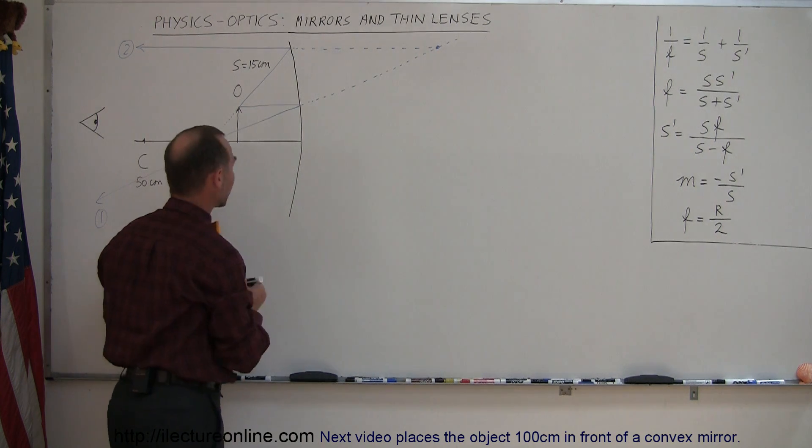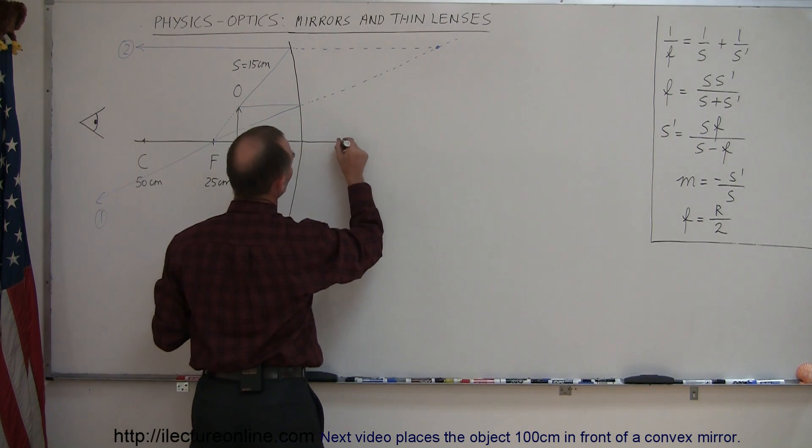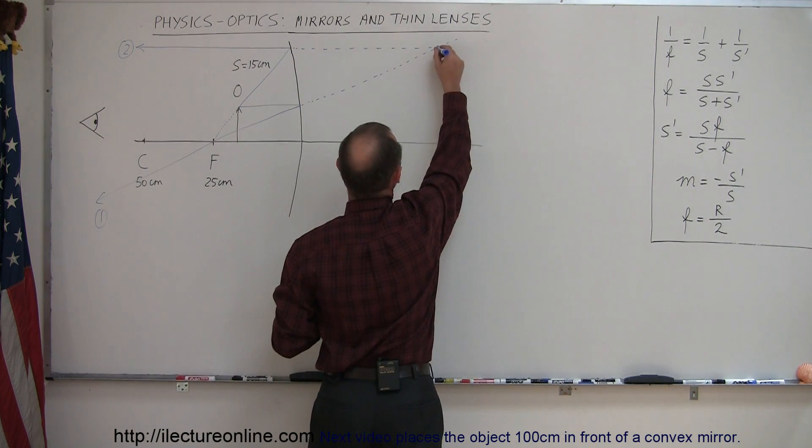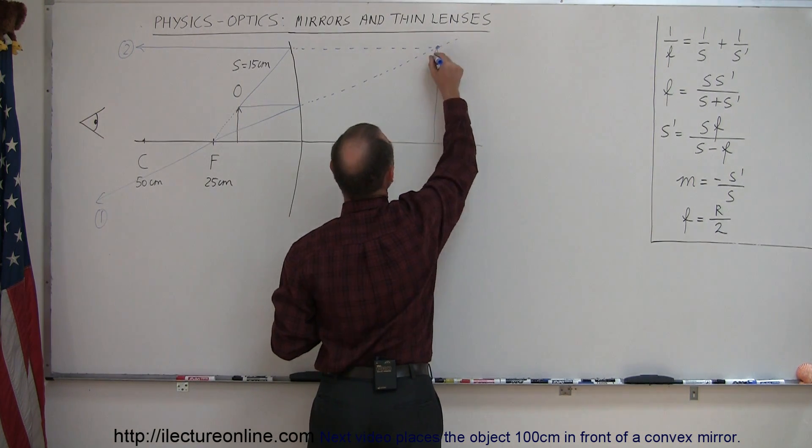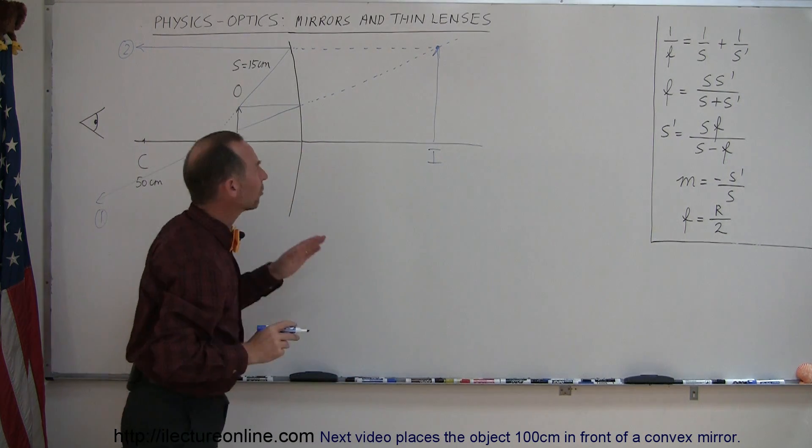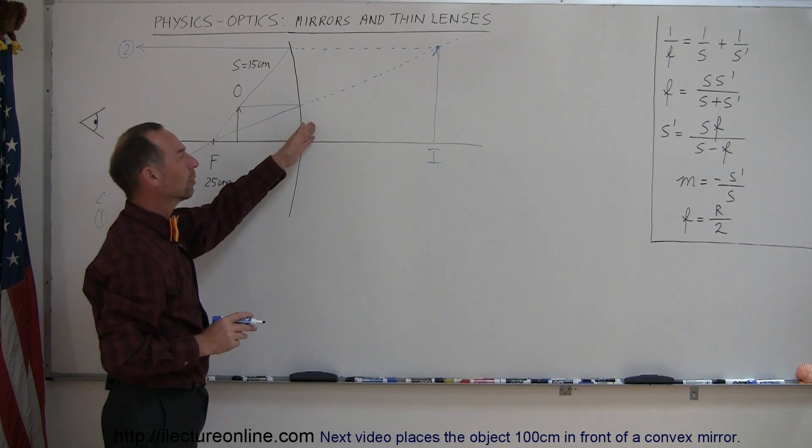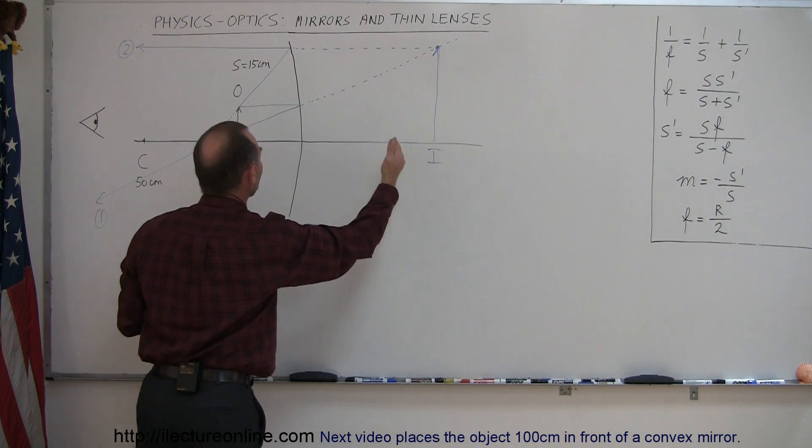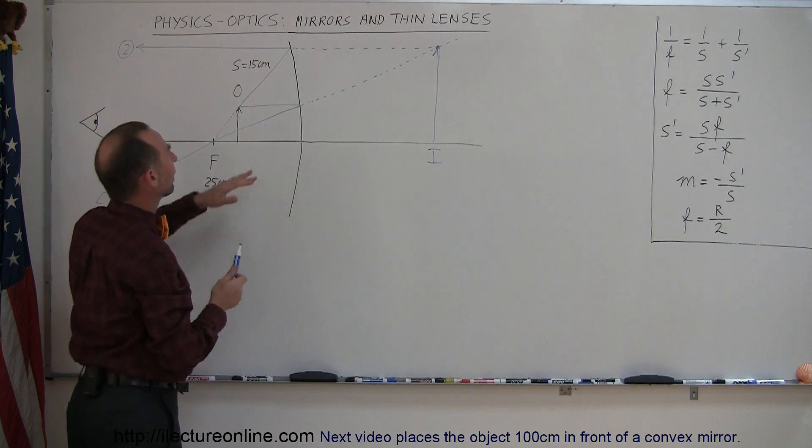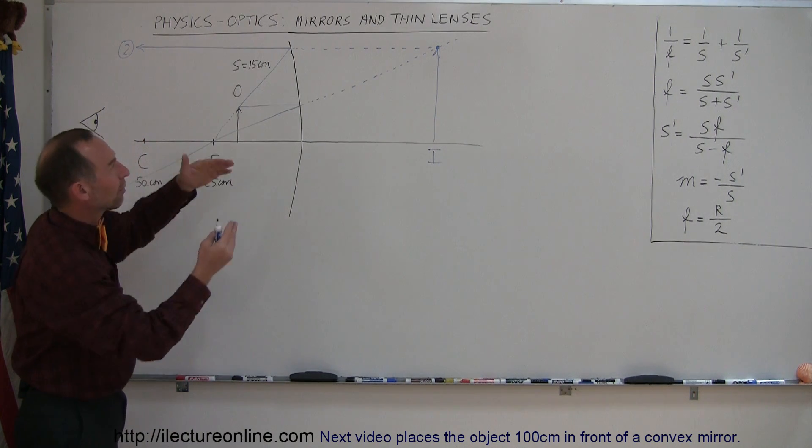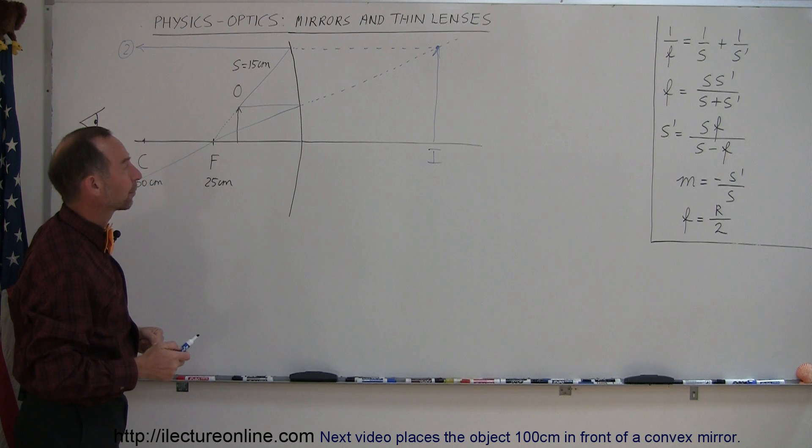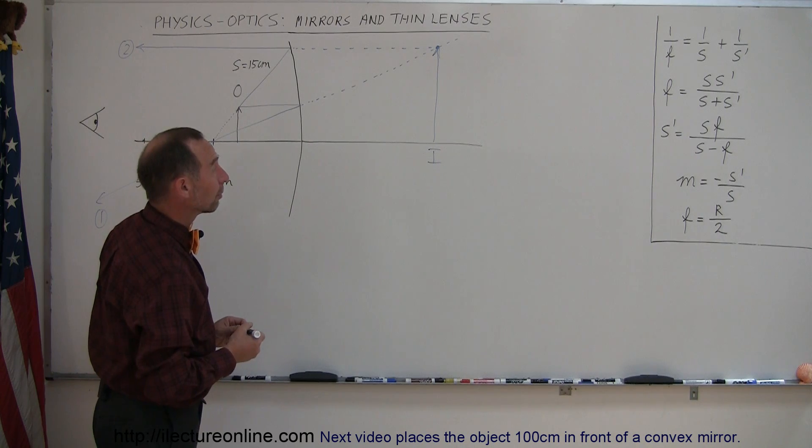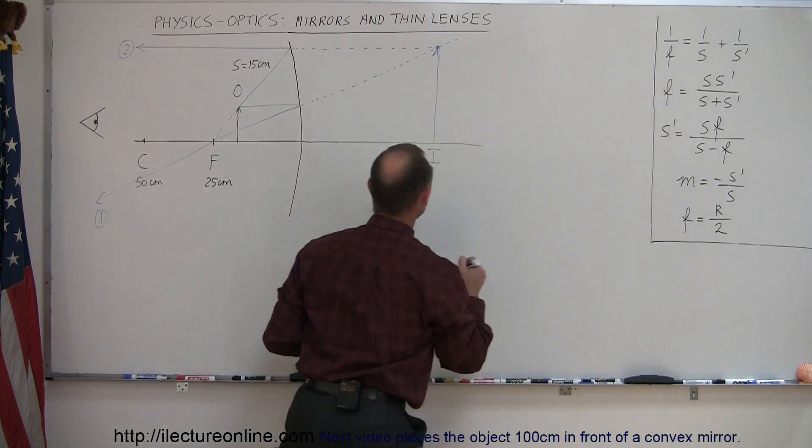If we now continue drawing the normal past the mirror like this, and then we can draw the image from there to there, and so this would be the image. Now since the image appears behind the mirror, it would be a virtual image. It's not really there because images can't appear behind the mirror. It just seems that way by looking at these rays coming from behind the mirror like that. All right, so mathematically, let's find out what the numbers are. So first we're going to find the position of the image.